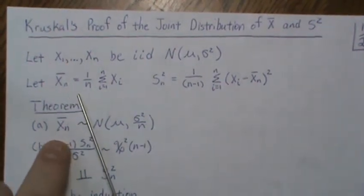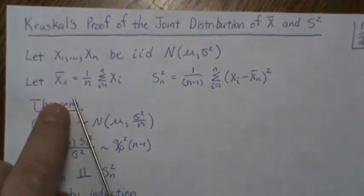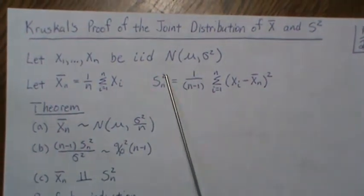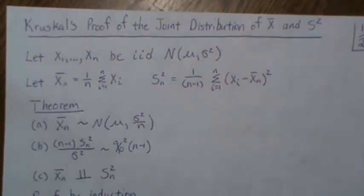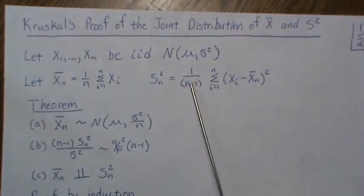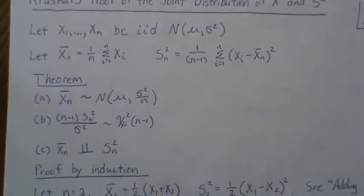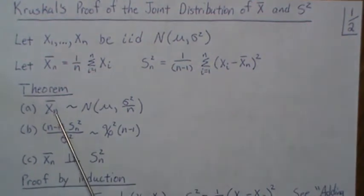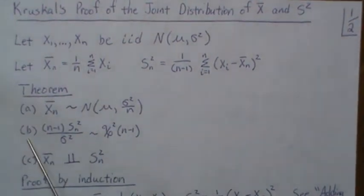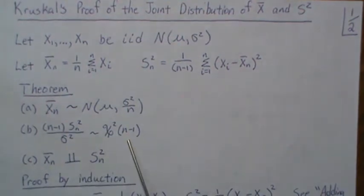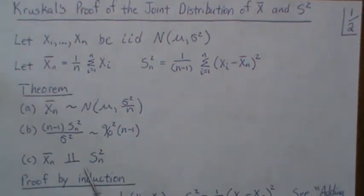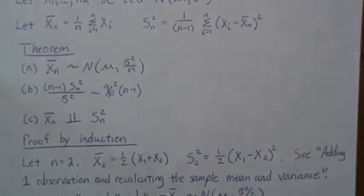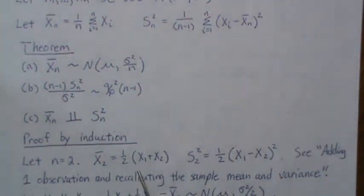We're going to let X_n bar be the sample mean based on a sample of size n, and S_n squared is going to be the sample variance based on a sample of size n — specifically the unbiased variance. The theorem states: (a) that the sample mean is normally distributed, (b) that (n-1)S_n²/sigma² is distributed as chi-squared, and (c) that the sample mean and sample variance are independent. They use a proof by induction, so let's let n equal two.